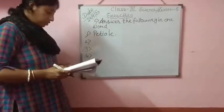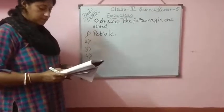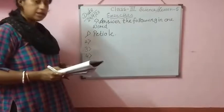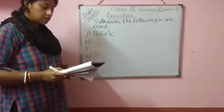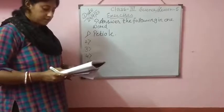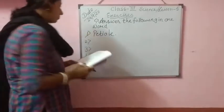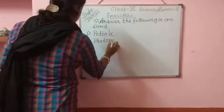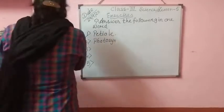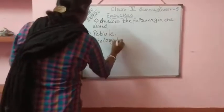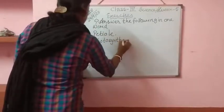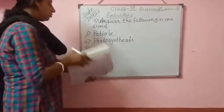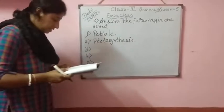Number 2: the process by which green plants make their own food. The name of the process is photosynthesis. Number 2 answer will be photosynthesis.